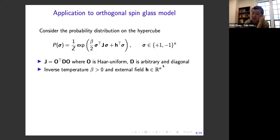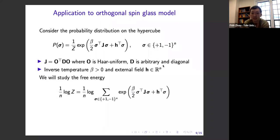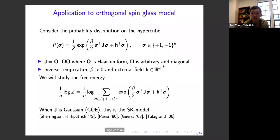The second term of the Hamiltonian is the external field term H^T sigma, which biases the mean toward a particular direction. What I'll be interested in is the free energy of this model, where Z is the normalizing constant. There's a very special case — where J is a Gaussian (GOE) matrix — for which we have very deep understanding: the celebrated Sherrington-Kirkpatrick model. What I'm talking about today is a much simpler setting where beta is small — the high-temperature regime — but for more general orthogonally invariant J that might not have independent or Gaussian-distributed entries.